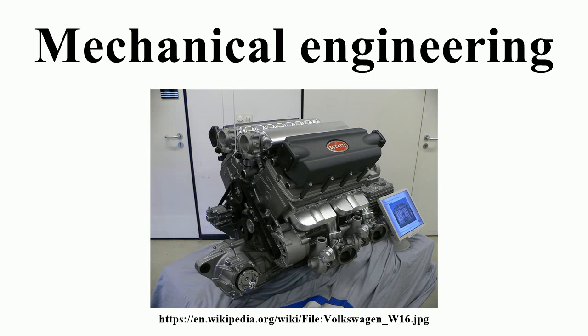In the U.S., to become a licensed professional engineer, an engineer must pass the comprehensive FE exam, work a minimum of four years as an engineering intern or engineer in training, and pass the Principles and Practice (PE) exam. The requirements are set forth by the National Council of Examiners for Engineering and Surveying, composed of engineering and land surveying licensing boards representing all U.S. states and territories. In the U.K., current graduates require a BEng plus an appropriate master's degree or an integrated MEng degree, a minimum of four years postgraduate on-the-job competency development, and a peer-reviewed project report in the candidate's specialty area to become a chartered mechanical engineer through the Institution of Mechanical Engineers. CEng MIMechE can also be obtained via an examination route through the City and Guilds of London Institute.